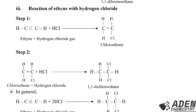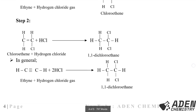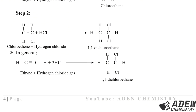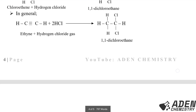Reaction of ethyne with hydrogen chloride: step one, ethyne reacts with HCl gas. The triple bond breaks to form a double bond, giving chloroethene. Step two: chloroethene reacts with more HCl, the double bond breaks to a single bond, giving 1,1-dichloroethane. In general: ethyne + 2HCl → 1,1-dichloroethane.